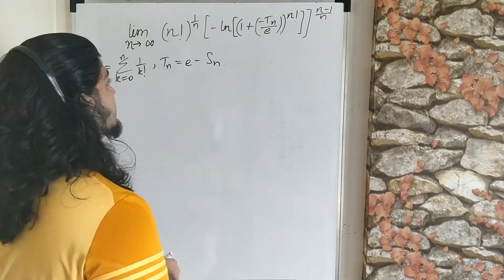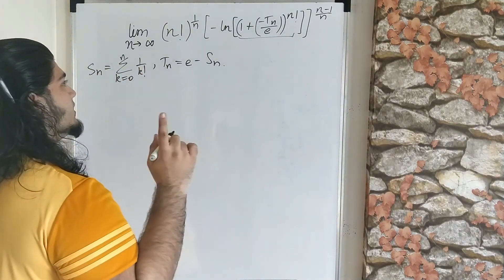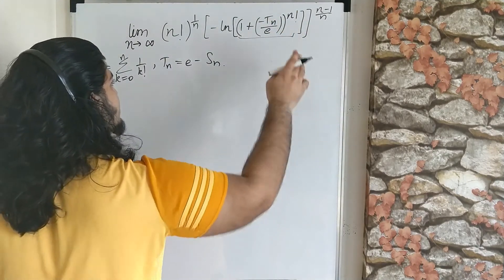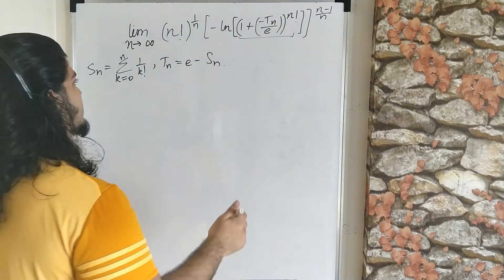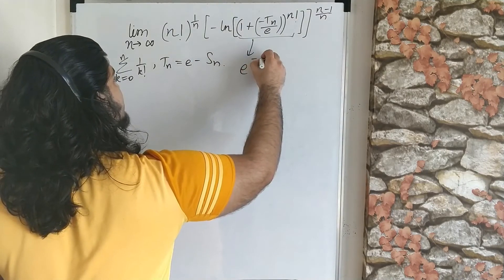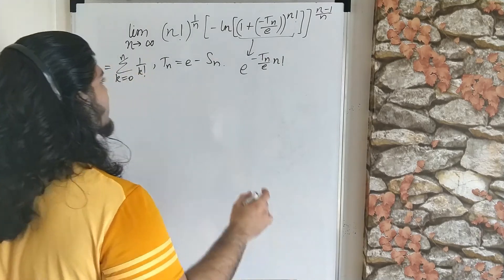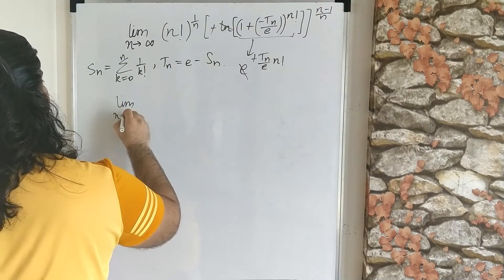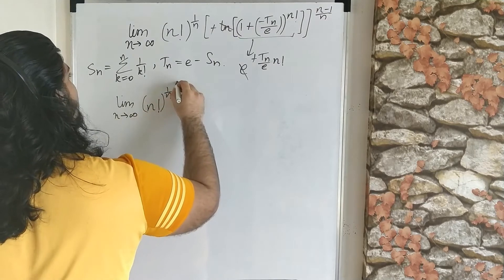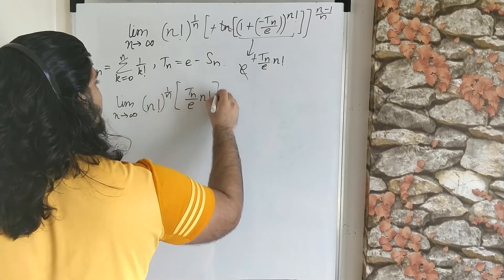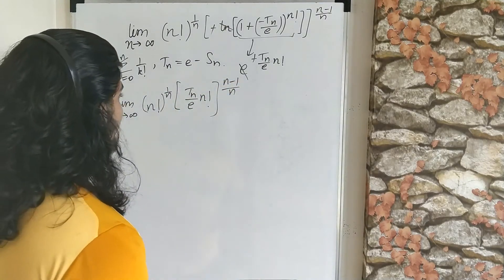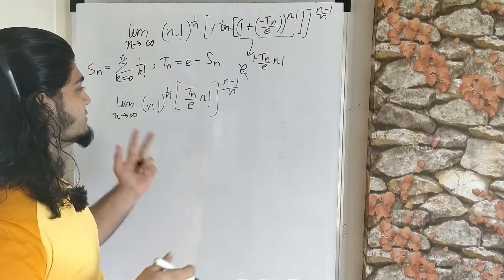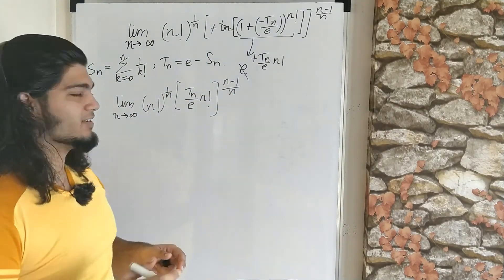It may seem really complicated, but it simplifies quite a lot. Inside the ln we identify f(x) = −T_n/e, which goes to 0, and g(x) = n factorial to the (n−1)/n, which goes to infinity. This entire thing becomes e to the power of (−T_n/e)·n factorial. The ln and e cancel out, and the two minus signs cancel, leaving us with the limit as n goes to infinity of n factorial to the power 1/n times T_n/e times n factorial to the (n−1)/n. We have gotten rid of all the addition, the ln, and the exponentials.